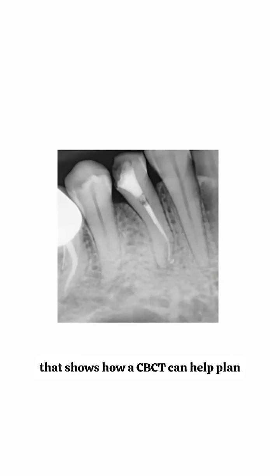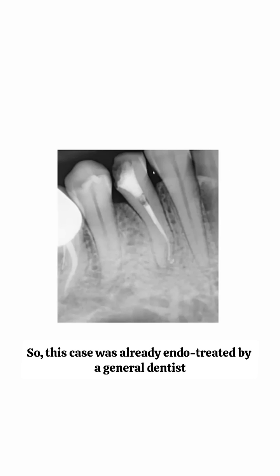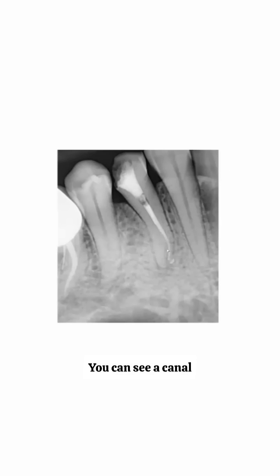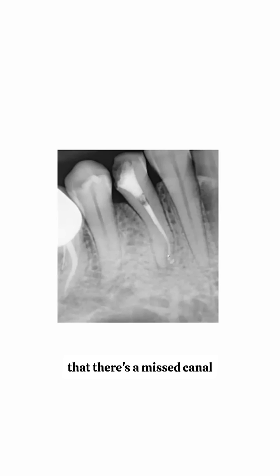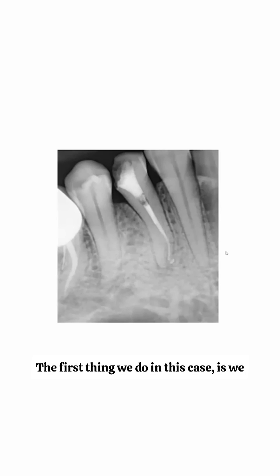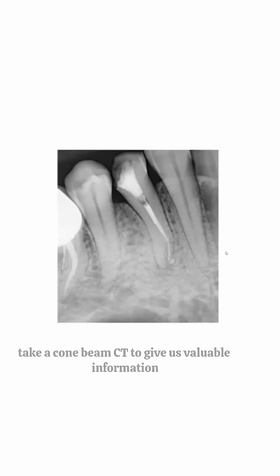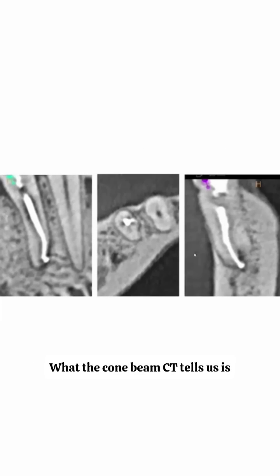Here's a great case that shows how a CBCT can help plan and treat retreatment cases. This tooth was already endo-treated by a general dentist. You can see a canal that's filled, and you can clearly see there's a missed canal or a root that isn't filled. So the first thing we do in this case is take a cone beam CT to give us valuable information.